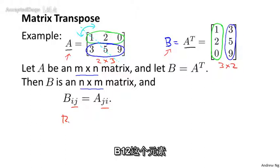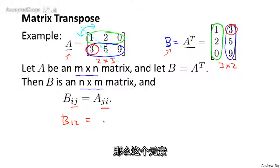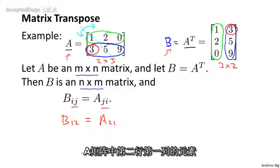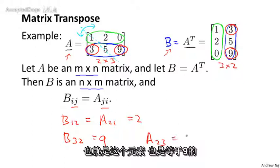So for example, B_12 is going to be equal to, look at this matrix B, B_12 is going to be equal to this element 3, first row, second column. And that's equal to A_21, second row, first column, which is equal to 3. And another example, B_32, that's B_32 is this element 9. And that's equal to A_23, which is this element up here, 9.